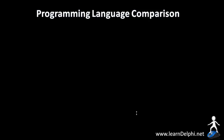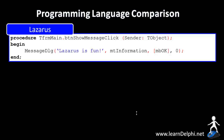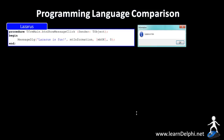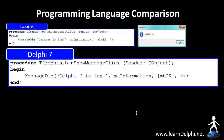Now let me show you a few examples of different programming languages. This is a code snippet written in Lazarus. It is not necessary for you to understand everything that you see yet — just note the English words like procedure, begin, and end. And this is a code snippet written in Delphi 7. Also note the English words like procedure, begin, and end.